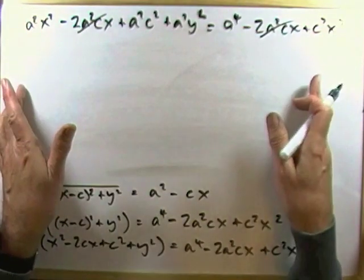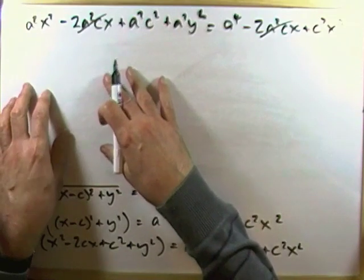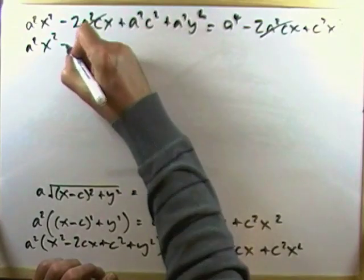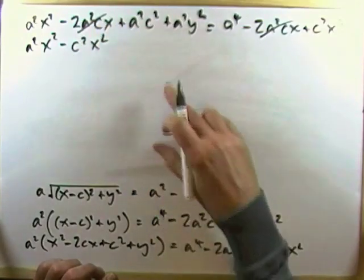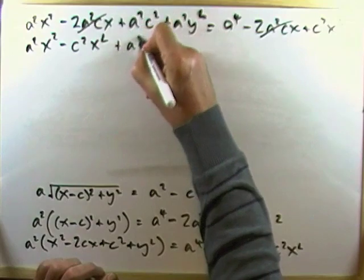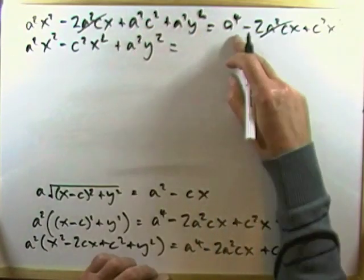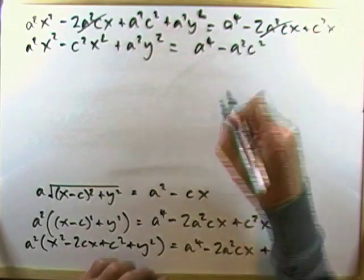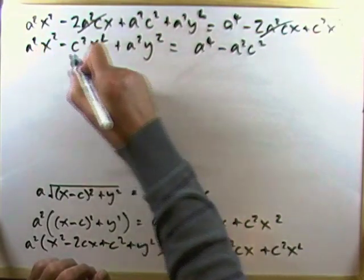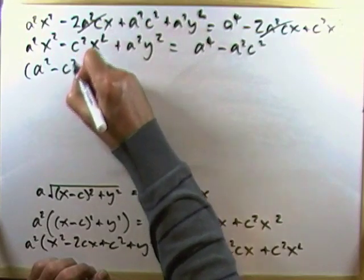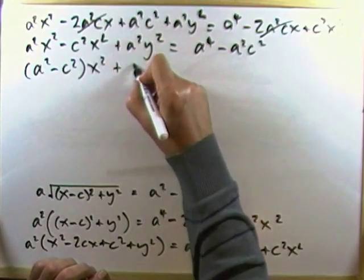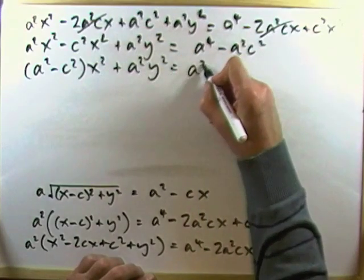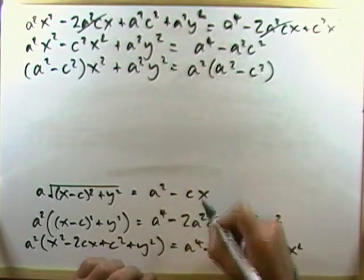Next thing would be put all the letters on one side, the x's and y's together. So, I've got a squared x squared. I could take over that minus c squared x squared. Leave that in there. Plus a squared y squared equals. I've got a to the 4 and I could bring over minus a squared c squared. x squared could go together. a squared minus c squared x squared plus a squared y squared equals. And again, take out the a squared and left with a squared minus c squared.